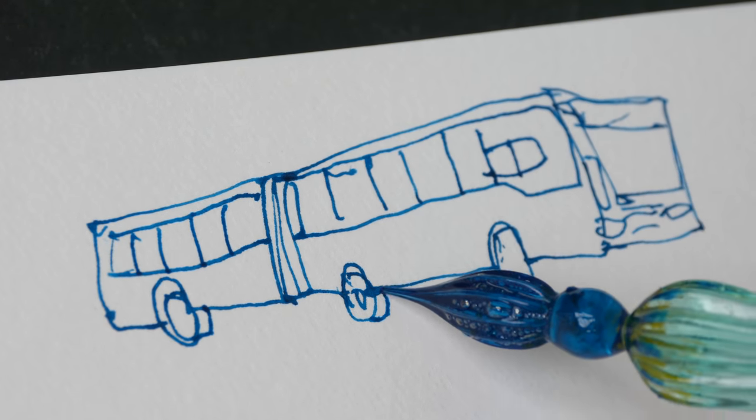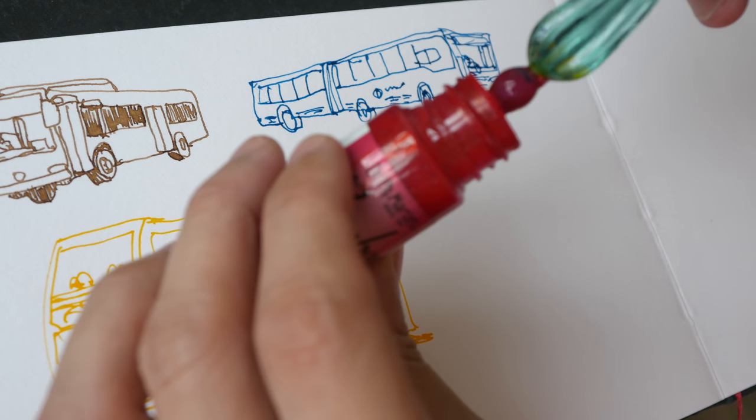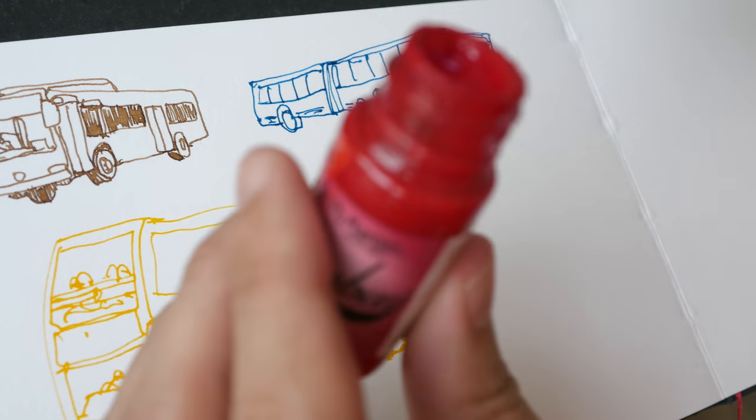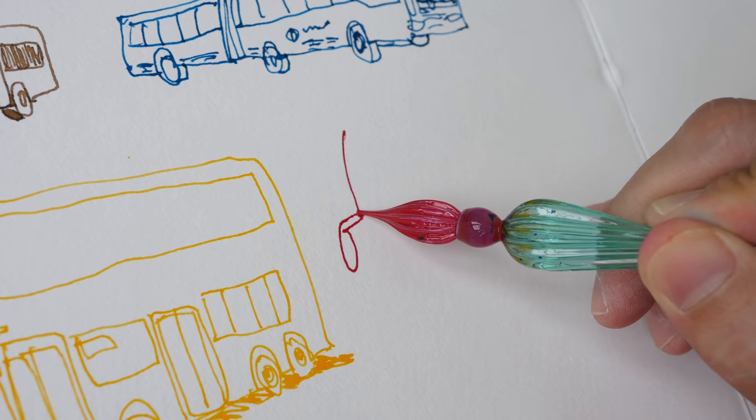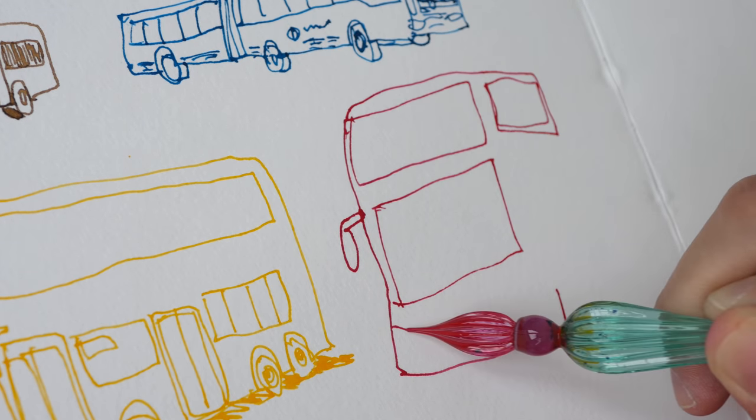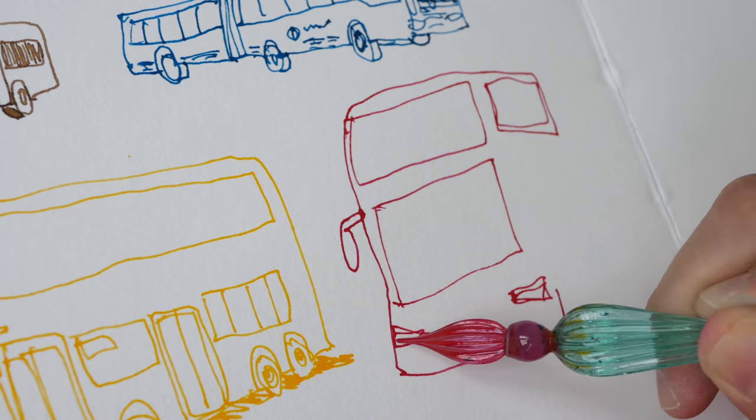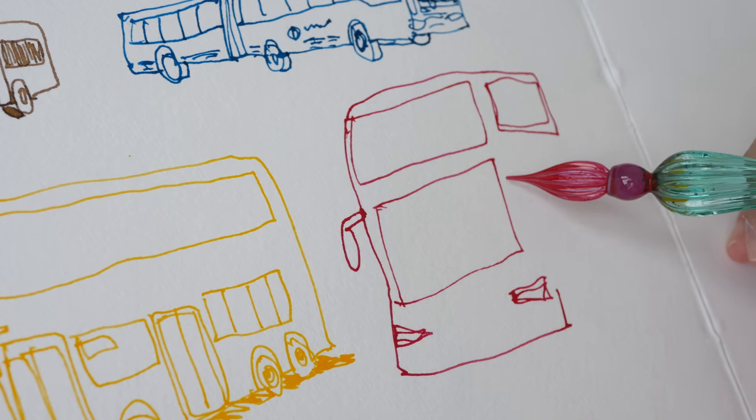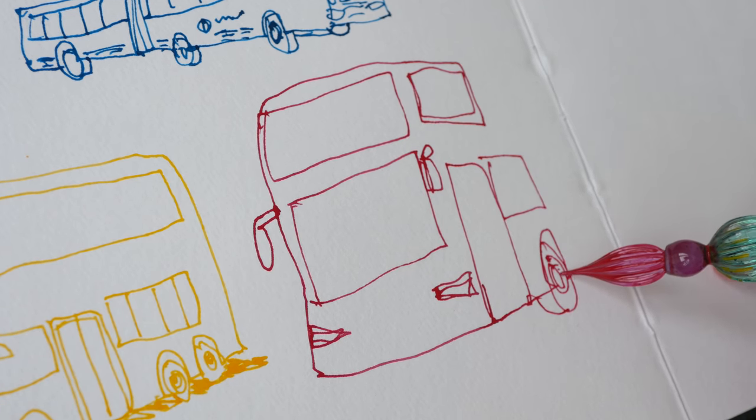Let me make one last drawing before I conclude this video. This color is crimson. So in Singapore, we have those open top tourist bus as well. I've actually not been on one. Taking local buses is actually a pretty good way to get around the city, even if you are a tourist, because it's very cost effective.